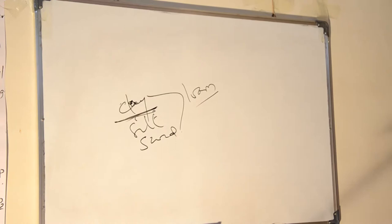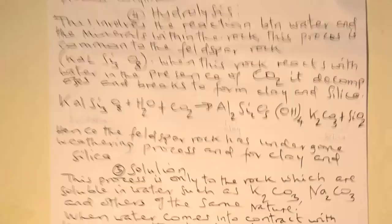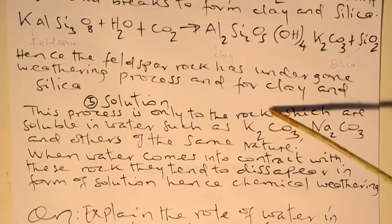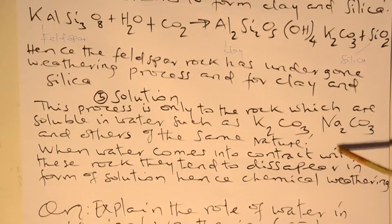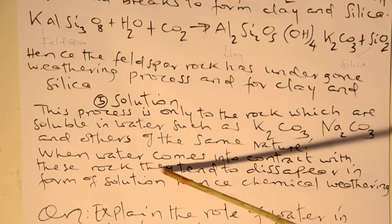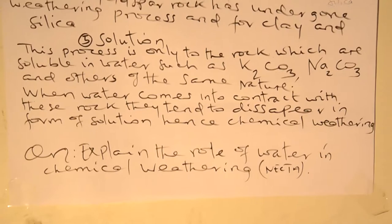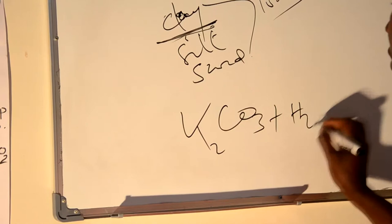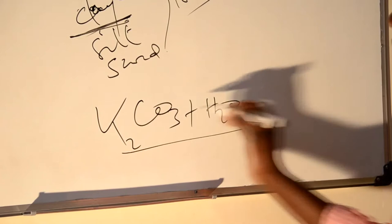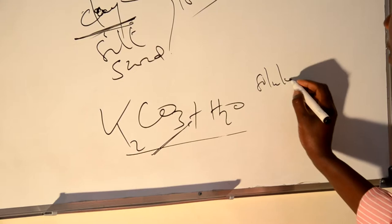Apart from that, there is another which is called solution. This process is only for rocks which are soluble in water, such as potassium carbonates and sodium carbonates. When water comes into contact with this rock, they tend to disappear in the form of solution. Hence, chemical weathering can take place. Potassium and carbon dioxide, wherever reacted in water, can dissolve itself, changing into solution — meaning into a liquid state after the reaction.